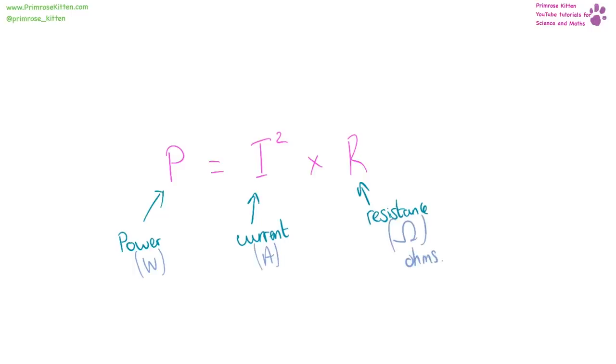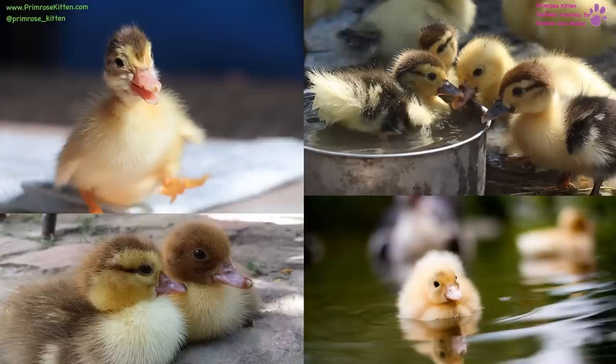Power is equal to potential difference times current. Power is measured in watts, that is a capital W. Potential difference is measured in V, and current is measured in amps. Power is equal to the current squared times the resistance. Power is measured in watts, capital W. Current is measured in amps, and resistance is measured in ohms. A lot of maths in this video, so here is a quick little duckling break to refresh us for a bit more revision.